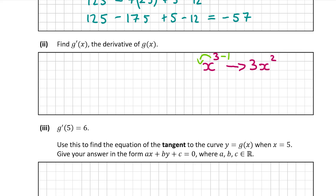Now an example where there is a number before the x: for 3x to the power of 4, bring the 4 to the front and multiply by 3, giving 3 times 4 equals 12. Keep x and reduce the power by 1, so 4 minus 1 is 3. Differentiating 3x to the power of 4 gives 12x cubed. And if there's no x term — just a number like 5 — differentiating that gives 0.